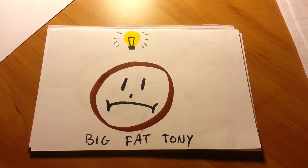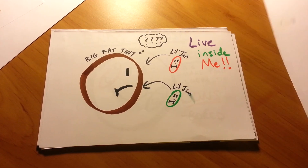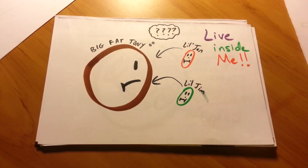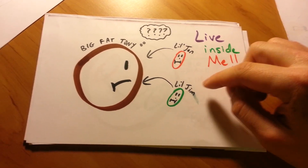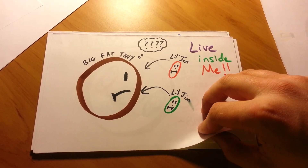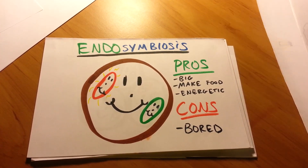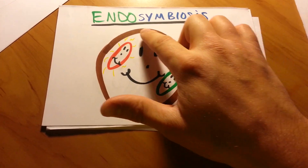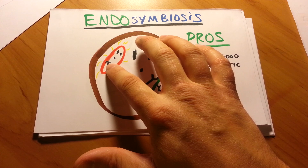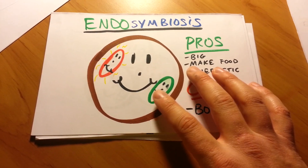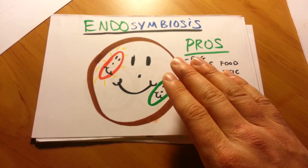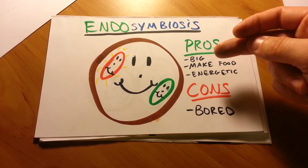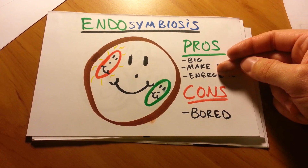So Big Fat Tony came up with an idea one day. He said, wait a minute — I'm a big tough dude, I've got a lot of outer shell, and I'm strong. Why don't you, Little John and Little Jim, live inside of me? And maybe we could live as a healthy family relationship. Thus is the birth of the endosymbiosis theory. Little John gave Big Fat Tony energy, and Little Jim gave Big Fat Tony some food from the sun, and Big Fat Tony gave both of them a nice place to live. So as a team, they were big, they made their own food, and they were energetic.